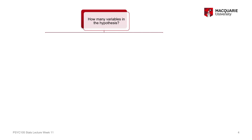To help you make that decision, I'm going to introduce something called a decision tree. This decision tree acts like a flowchart or flow diagram to help you identify the relevant pieces of information you need to understand, and then — based on the answers to questions about those pieces of information — determine what kind of test you need to use. The first and most important question to start with is: how many variables are there in the hypothesis?